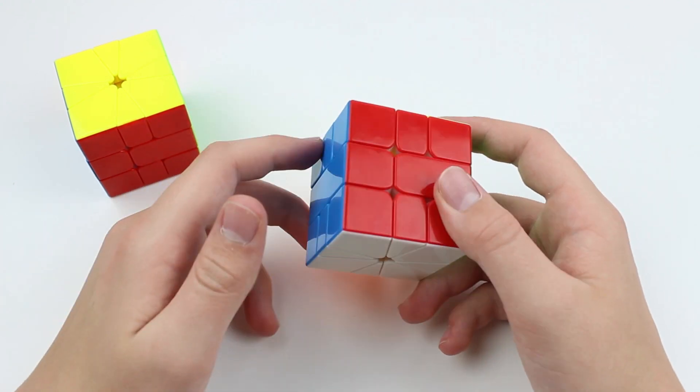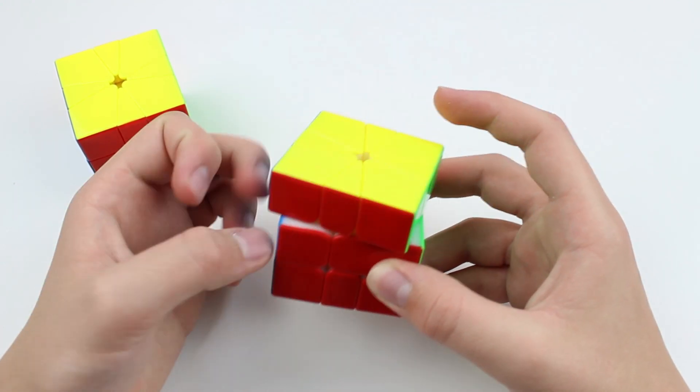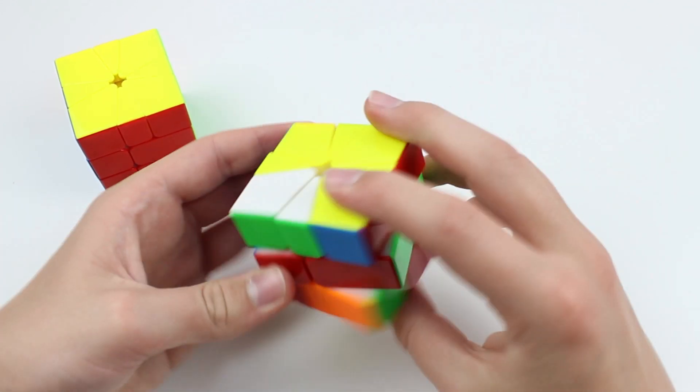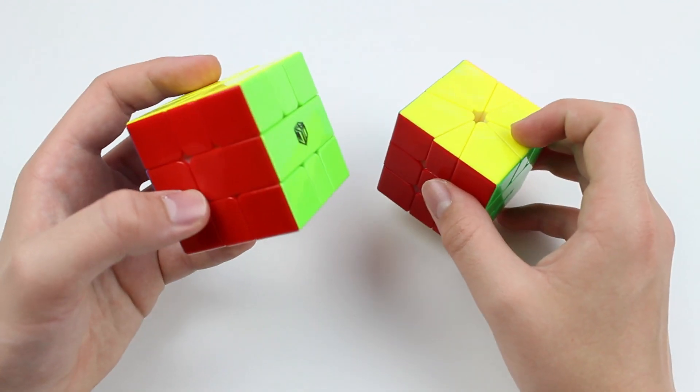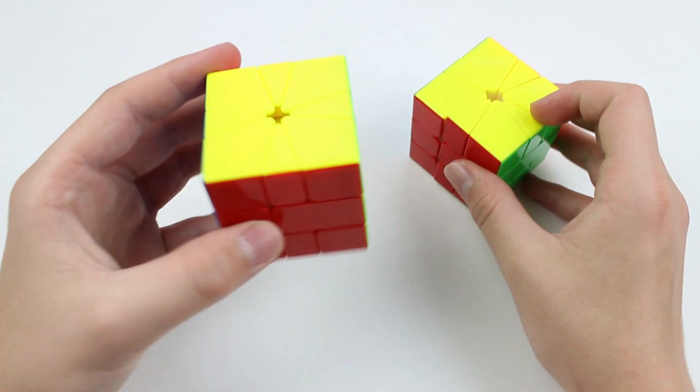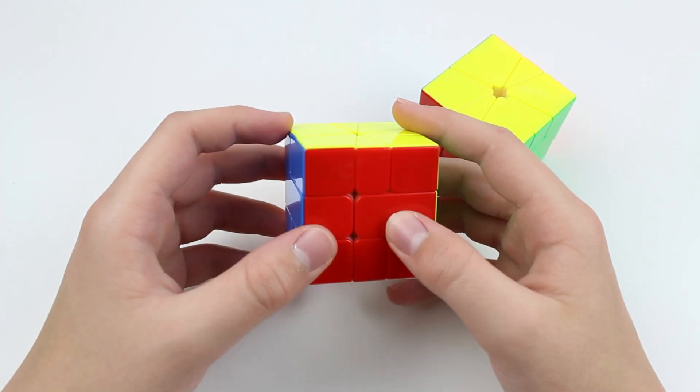So overall, I would recommend the Little Magic M square one if you are on any sort of budget, or if you're just looking for a fairly good square one or a magnetic square one that can help with turning. But if the flexibility of the square one is a big issue for you, then I would recommend the Volt, or if you just like slower cubes, then the Volt would be better for you as well.